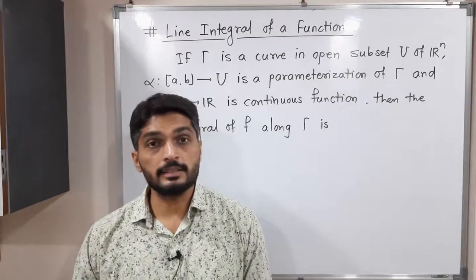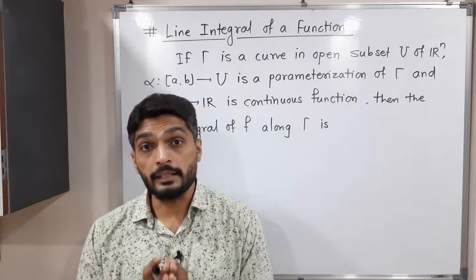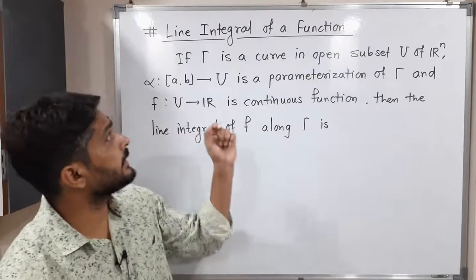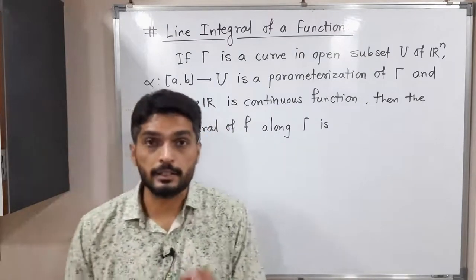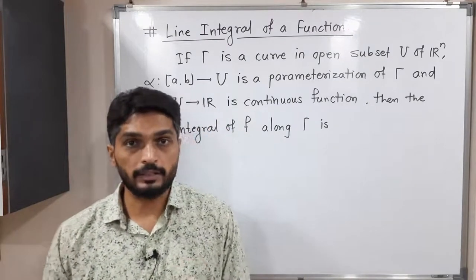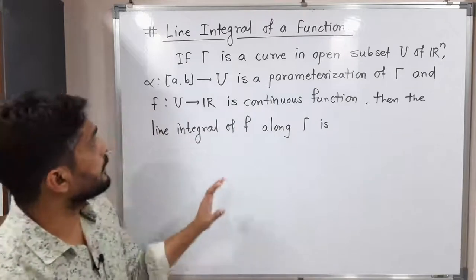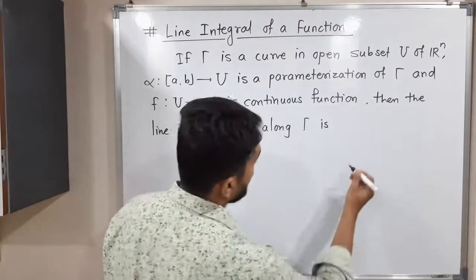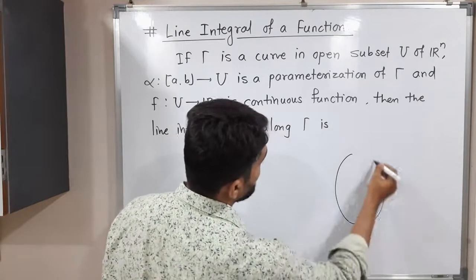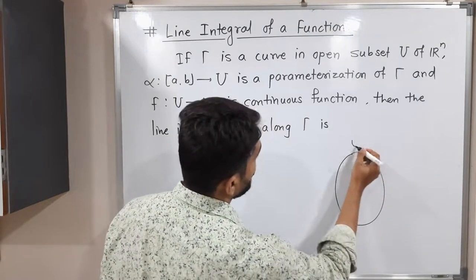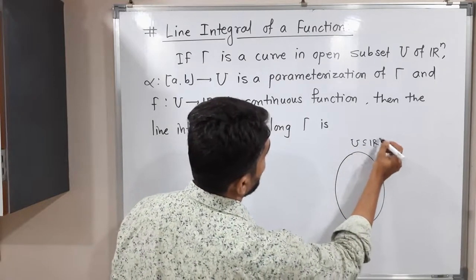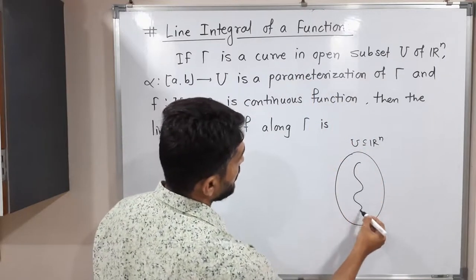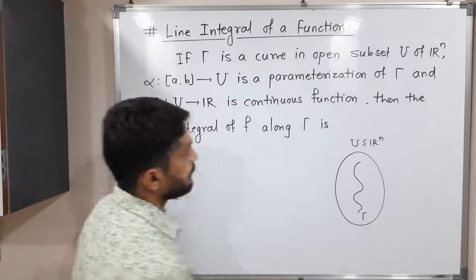Hi everyone. Let us discuss line integral of a scalar field. As mentioned here, this is the line integral of a function, but here we consider a scalar field. Let us discuss what we have here. Let U be any open subset of Rn. So let me draw the diagram. We have any open set U which is a subset of Rn, and let gamma be any curve in this set.